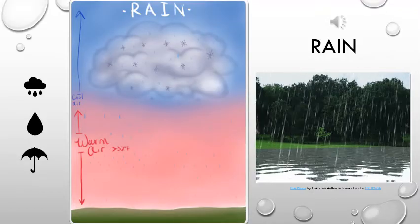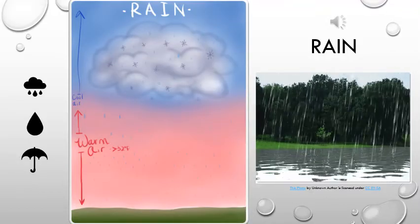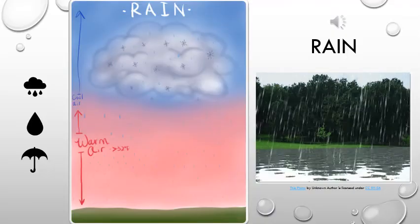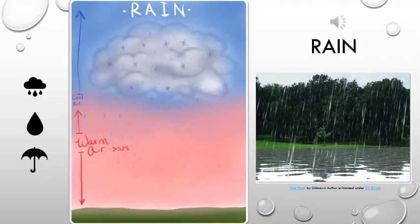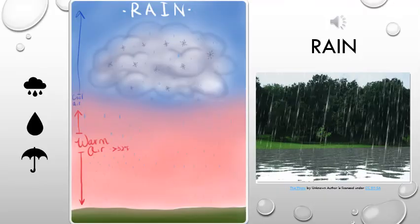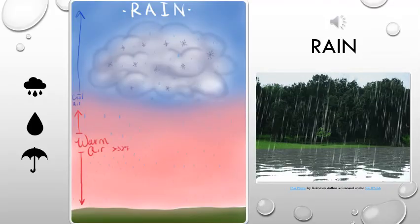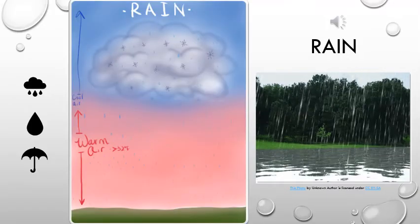In order for it to rain, the air below the cloud must be warmer than 32 degrees, the freezing point, so that the ice crystals and the water droplets don't freeze as they fall. That way they stay as liquid.